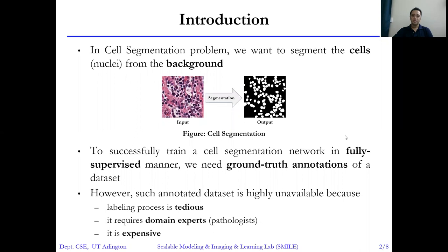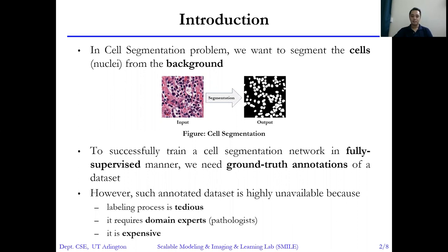So what is cell segmentation? In the cell segmentation problem, we want to segment the cells from the background. If we want to train a cell segmentation network in a fully supervised manner, we need the ground truth annotations of the dataset. But this kind of annotated dataset is highly unavailable because of the tedious labeling process, which requires domain experts and is expensive.